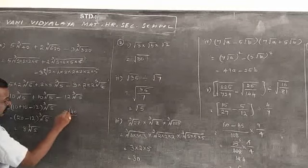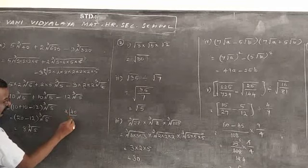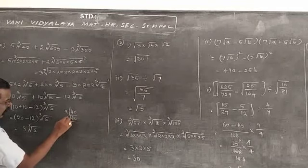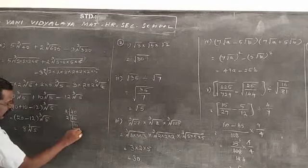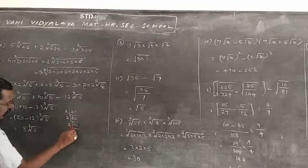Factorizing 40: 2 times 2 is 4, times 2 is 8 — wait, 2 times 20 is 40, again 2 times 10 is 20, again 2 times 5 is 10. So 40 = 2 × 2 × 2 × 5.